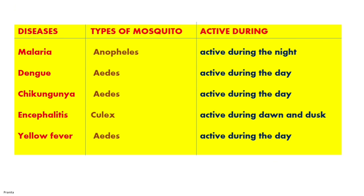This is a table showing the specific disease caused by each type of mosquito and the time when they are active. Malaria is caused by Anopheles, which remains active during the night. Dengue is caused by Aedes, which is active during the day. Chikungunya is caused by Aedes and remains active during the day. Encephalitis is caused by Culex and remains active during dawn and dusk. Yellow fever is caused by Aedes and is active during the day.